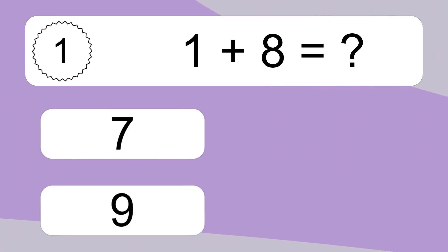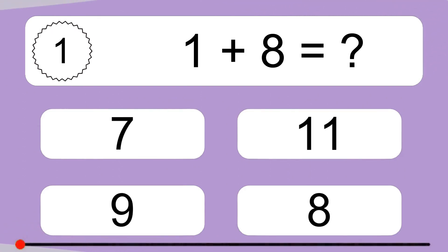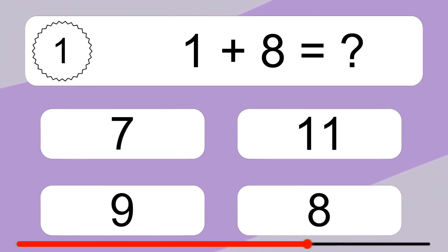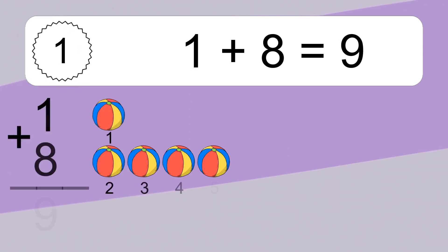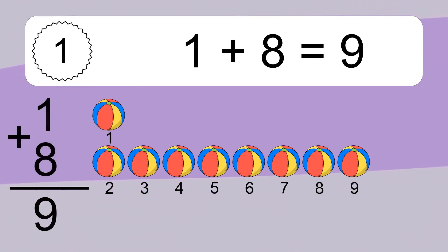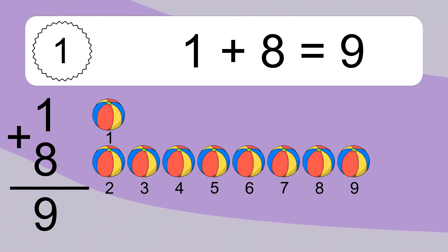1 plus 8 equals what? 1 plus 8 equals 9. Let's count it. 1, 2, 3, 4, 5, 6, 7, 8, 9.